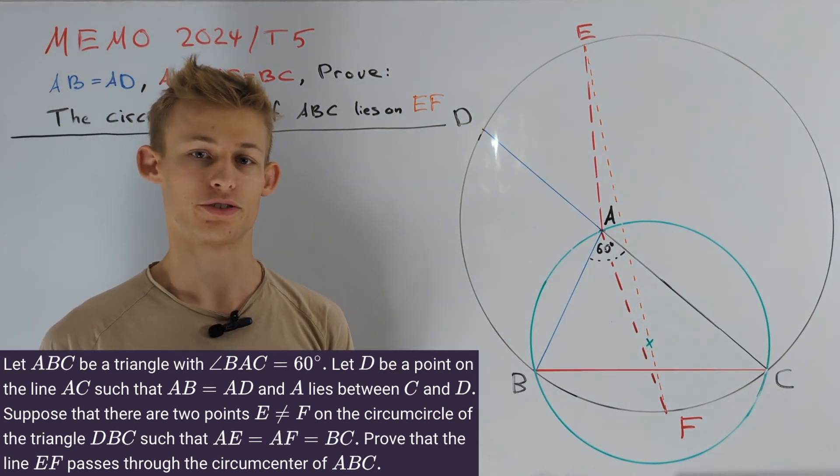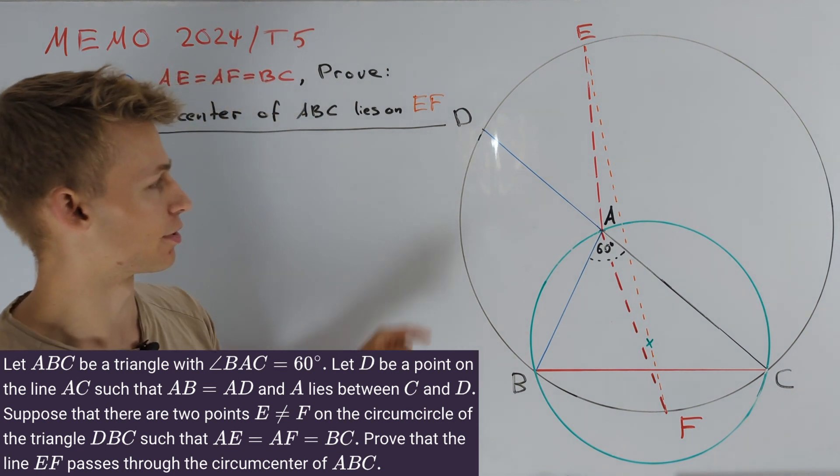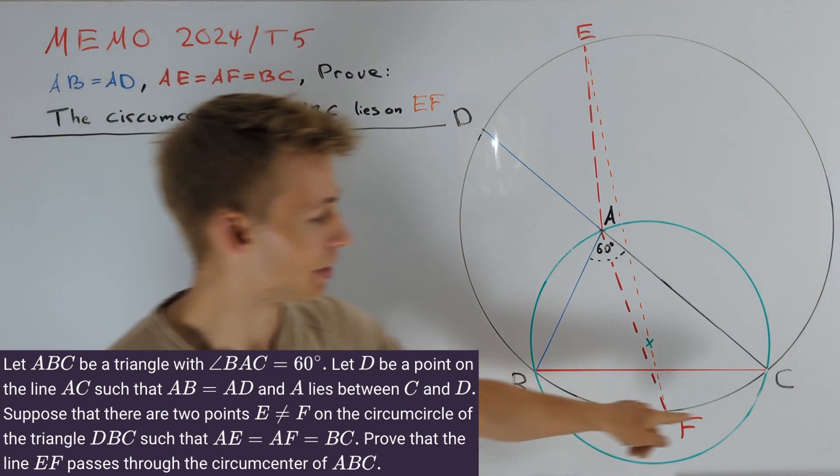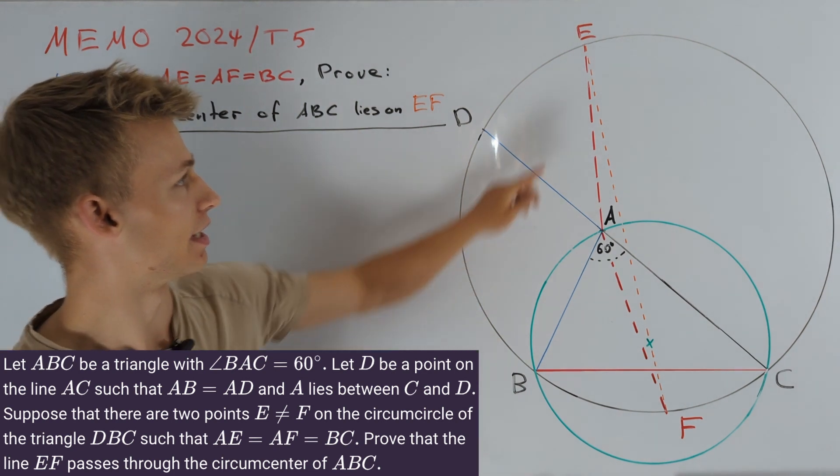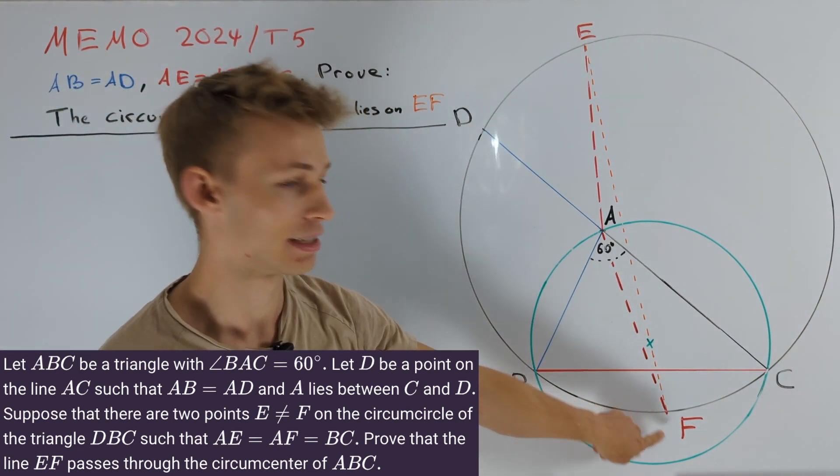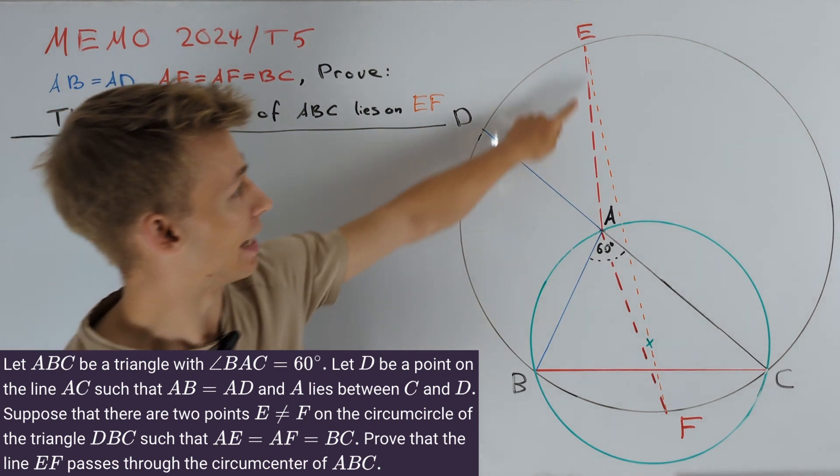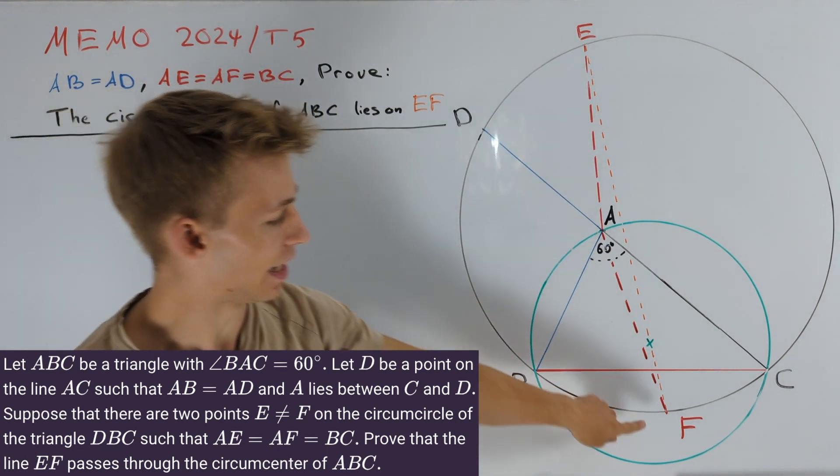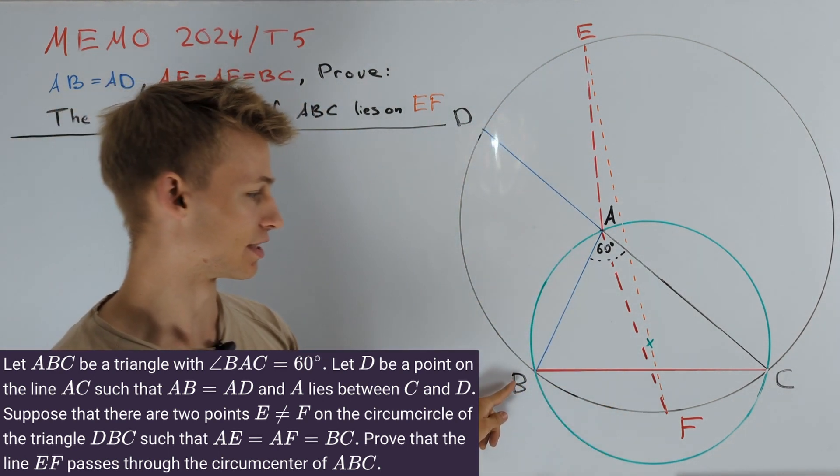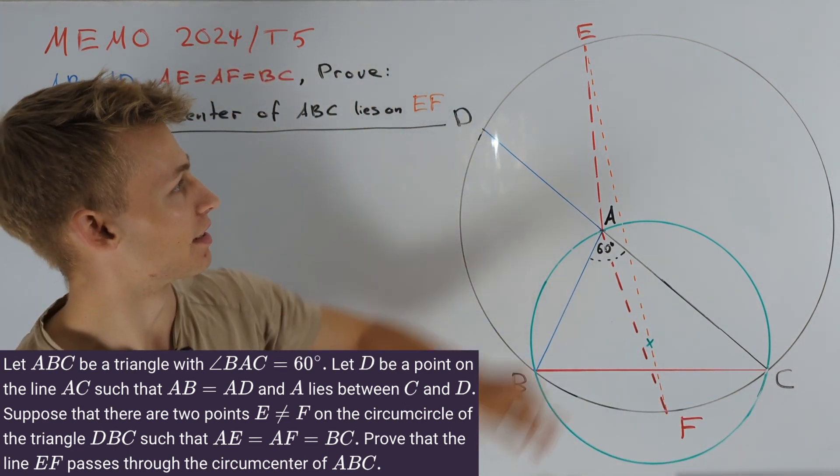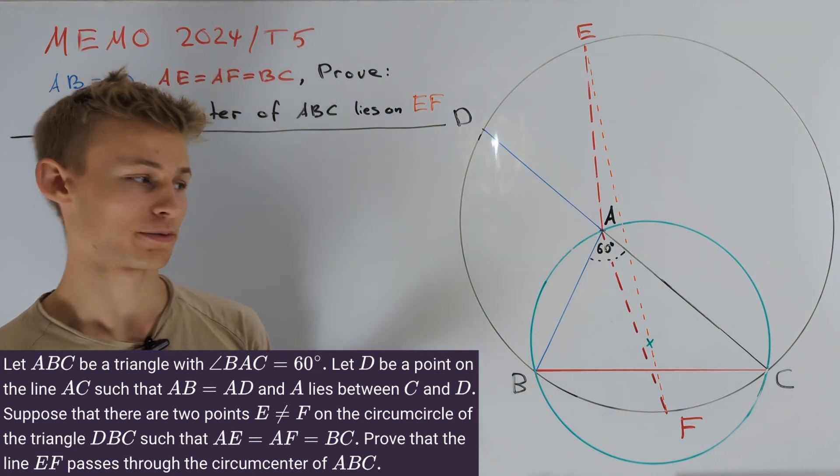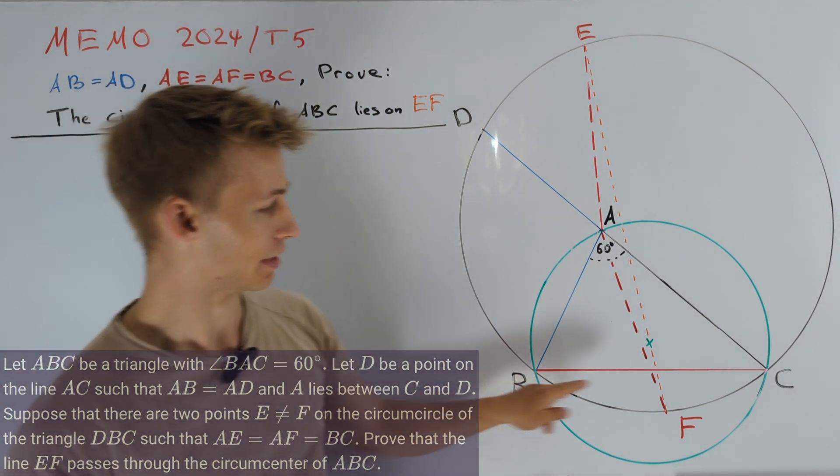The last step of our construction is to draw in the circumcircle of triangle DBC and select two points on its circumference, namely E and F, in such a way that AE is equal to AF is equal to the segment BC. Our task is to prove that the line EF passes through the circumcenter of triangle ABC.